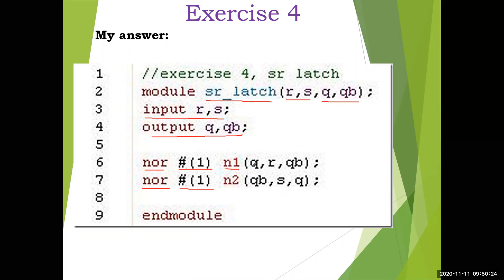For the first NOR gate, you have R and Q-bar cross-connected, and the output is Q — refer to the diagram. For the second NOR gate, S is one input and Q, which is the output of the first NOR gate, is cross-connected. What you are learning in this example is how to include the delay for the gates and how it changes the simulation output.